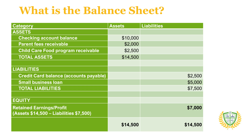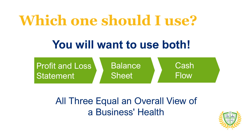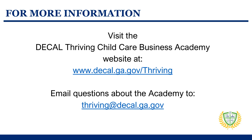Both the P&L, balance sheet, and your cash flow statement provide a holistic view of your business's health. Remember, the data is only as good as what you enter into your accounting system, so it's worth ensuring you have a good record-keeping system you can rely on and trust. For more information, visit the DECAL Thriving Child Care Business Academy website. If you have questions about the academy, send them to the email address on the screen.